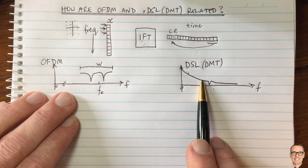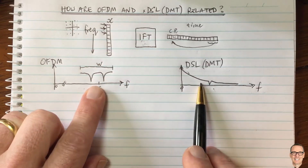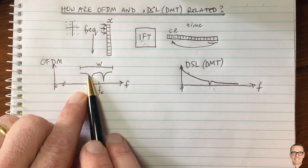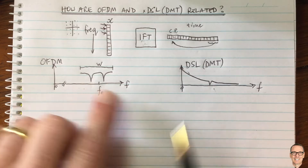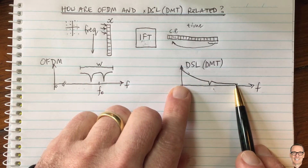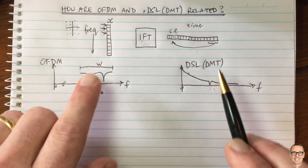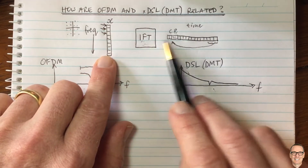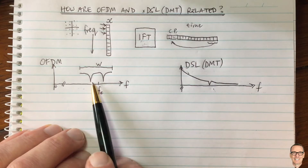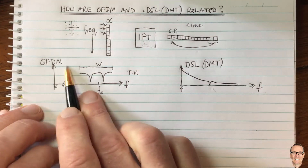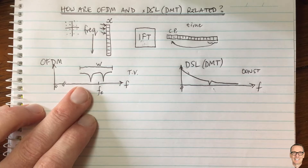So these are two different channels, but both use the inverse Fourier transform because both need equalization. In OFDM, equalization addresses spectral nulls from multi-path interference. In DSL, it handles the roll-off of the copper twisted-pair channel and bridged taps. The DSL channel is constant, whereas the wireless channel is time-varying — and that difference has important implications.